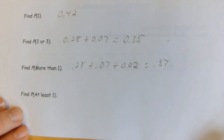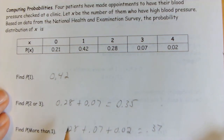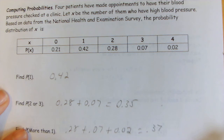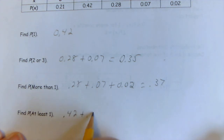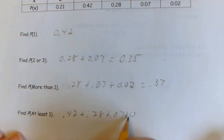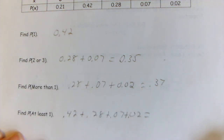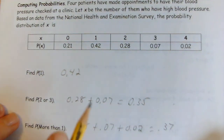What's the probability that at least one patient has high blood pressure? At least one means one, two, three, or four — just not none. So we add all probabilities except for X equals zero, and that adds up to 0.79, or 79%. Alternatively, you could compute one whole minus P(0).